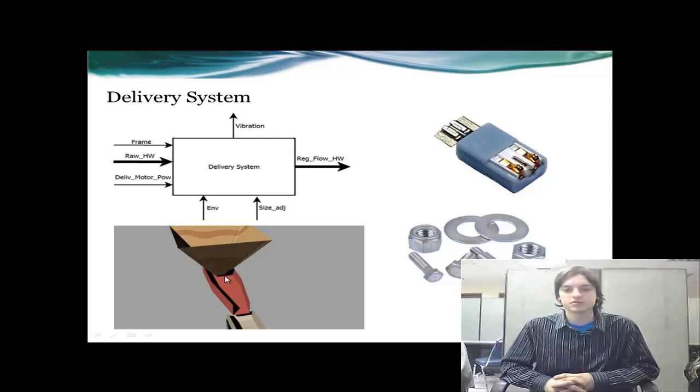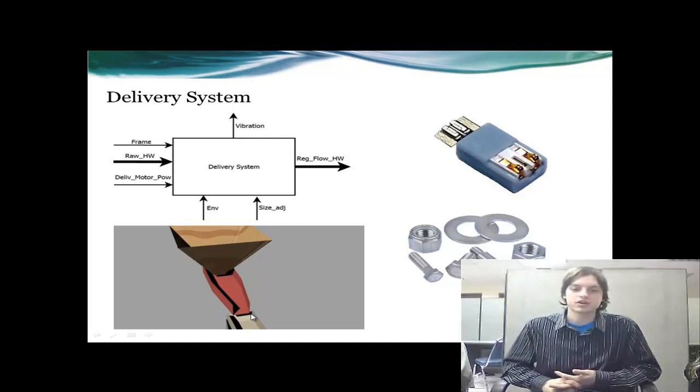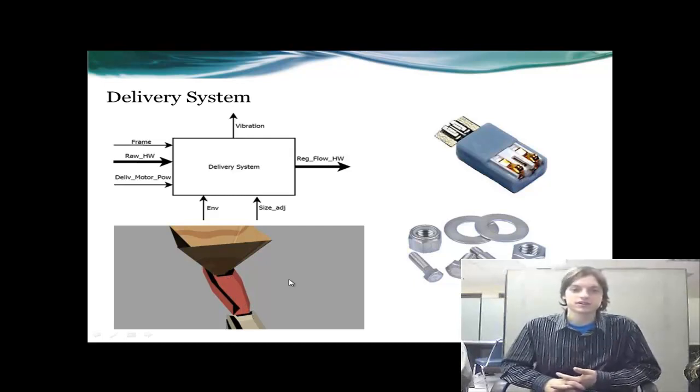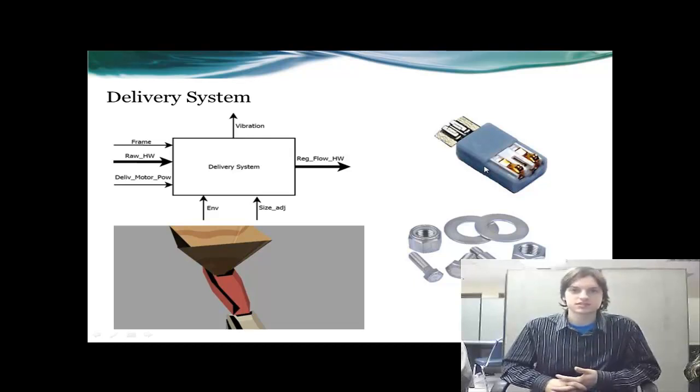After the parts fall from the bin to the chute, the chute has a slight downward slope with a vibrating motor attached to the bottom. We have chosen a lightweight material for the chute to lessen the load on the motor. This motor can vary speed from 0 to 6000 RPM to output a proper flow of parts to the counting system.